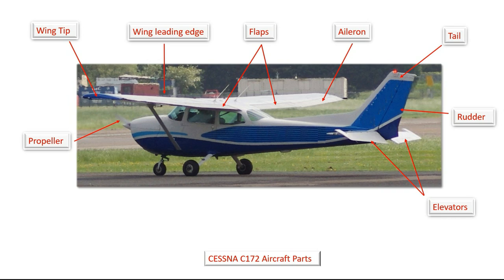Underneath that we've got the elevators, which go up and down. They enable us to control the pitch of the aircraft — by pulling back or pushing forward on the control column we can raise the nose of the aircraft or lower the nose of the aircraft, and that's called pitch.